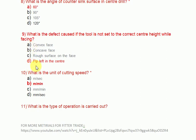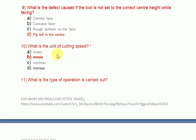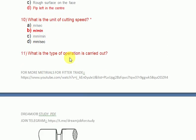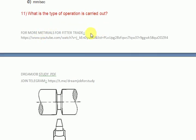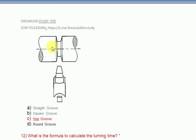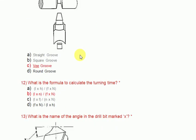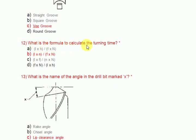What is the defect caused if the tool is not set to the correct center height while facing? The answer is a pip left in the center. What is the unit of cutting speed? Meters per minute. What type of operation is carried out? It is a V-groove operation. What is the formula to calculate the turning time? Turning time formula: L × n divided by f × N.